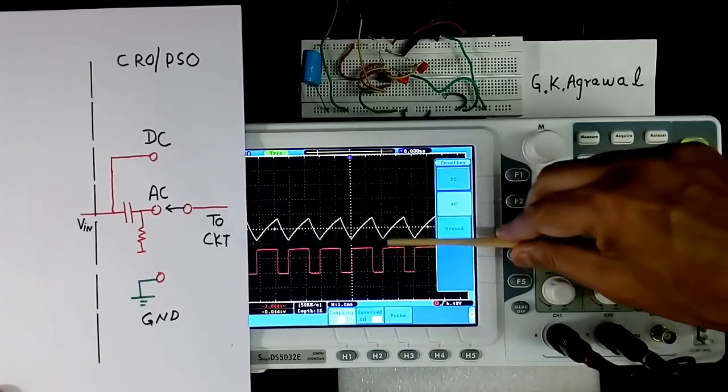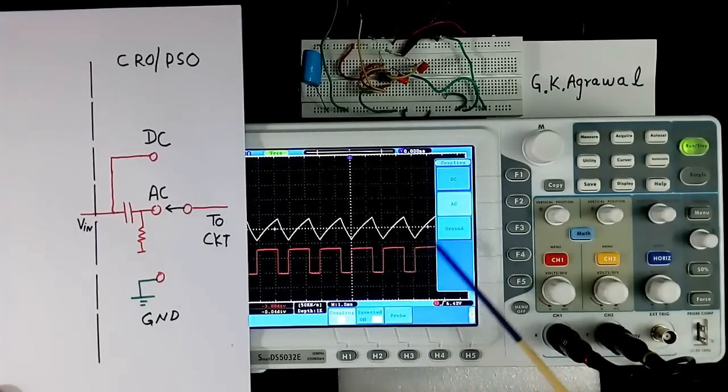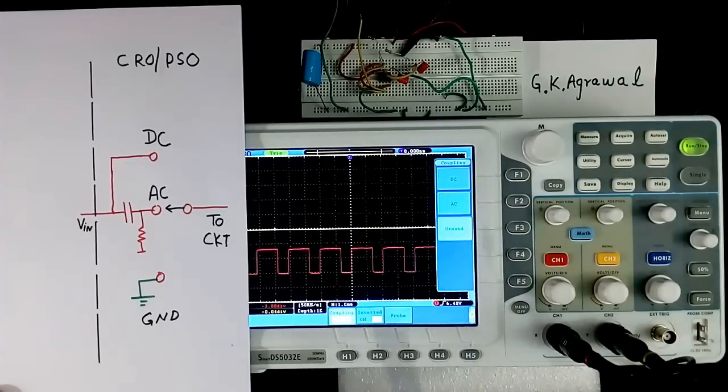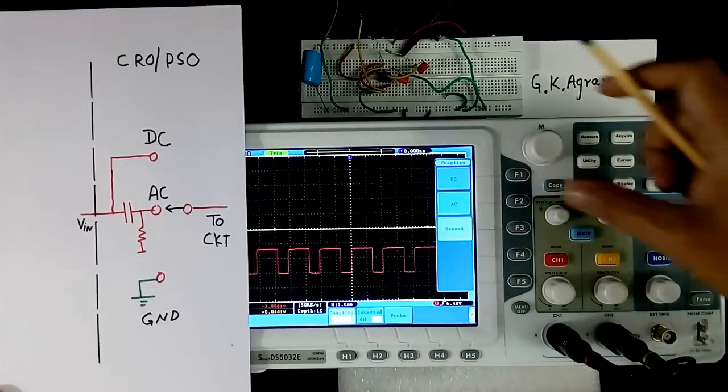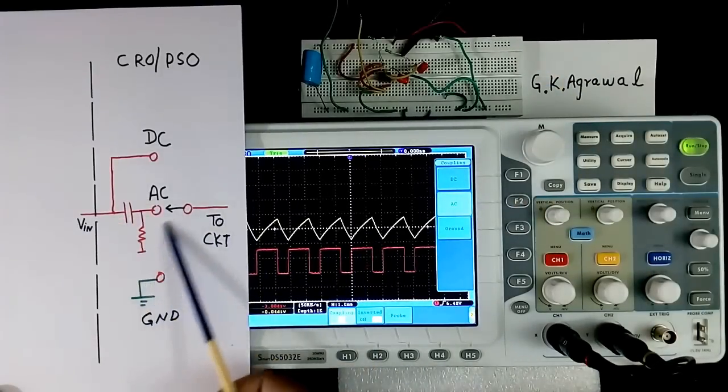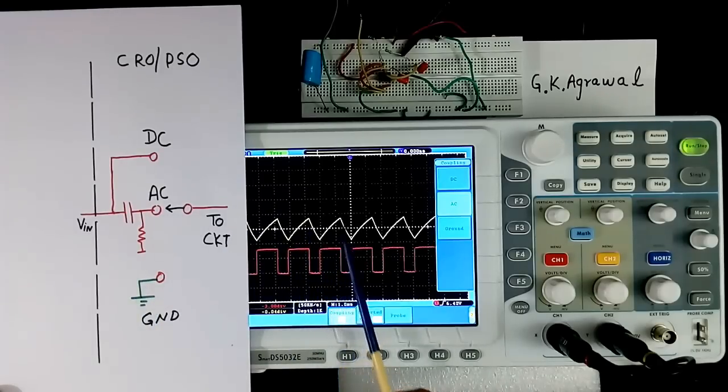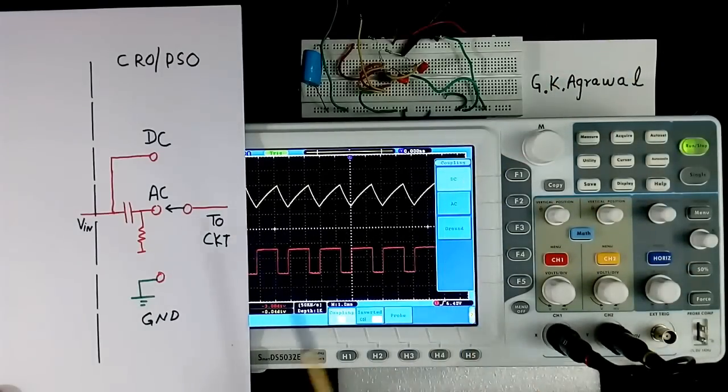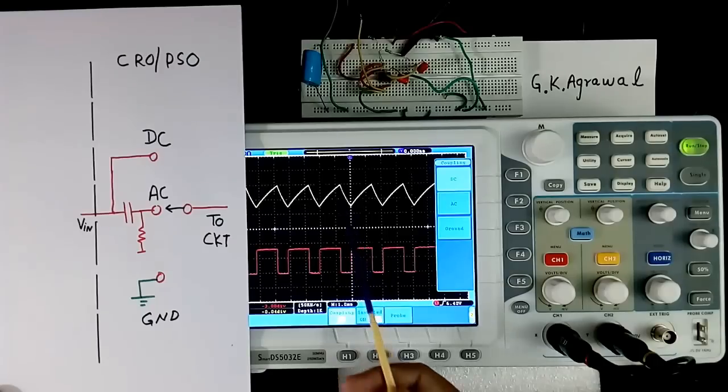Now I will show ground. I will select ground. Ground. Now input is connected here. Zero line. In this case, input is connected through this filter, high pass filter. So only AC is coming. And if I connect DC coupling, then DC plus AC both are coming.